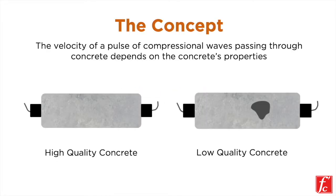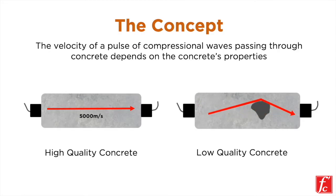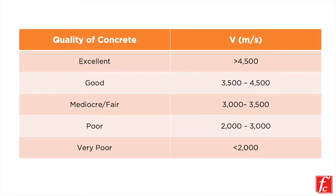In summary, the basic idea behind the pulse velocity method is that the velocity of a pulse depends on the quality of the concrete. In general, the higher the velocity, the higher the quality of concrete. Conversely, a low velocity often yields a low quality concrete with the presence of anomalies and deficiencies. By using this test, you can use the velocity calculated in order to assess the quality of concrete.